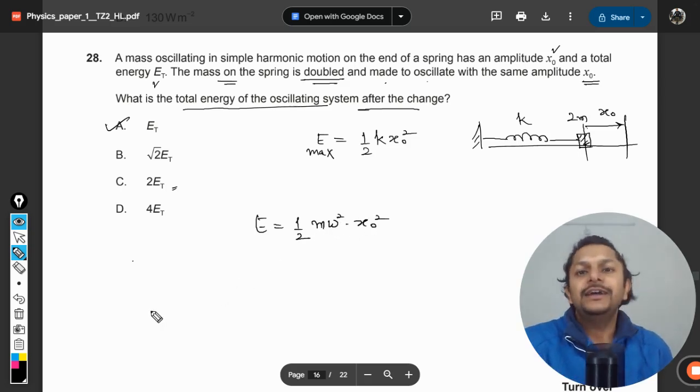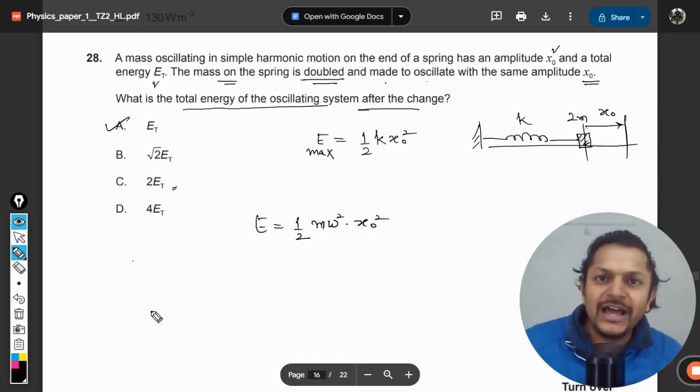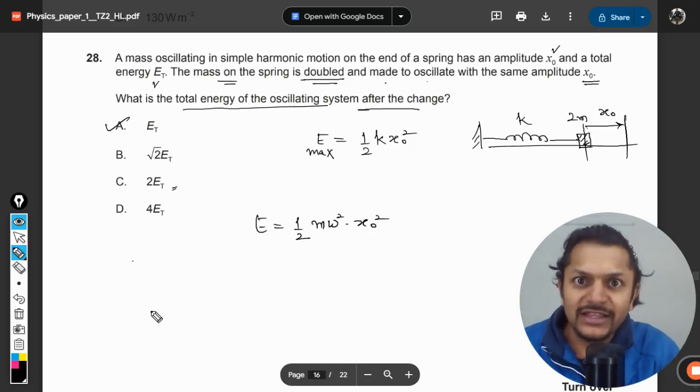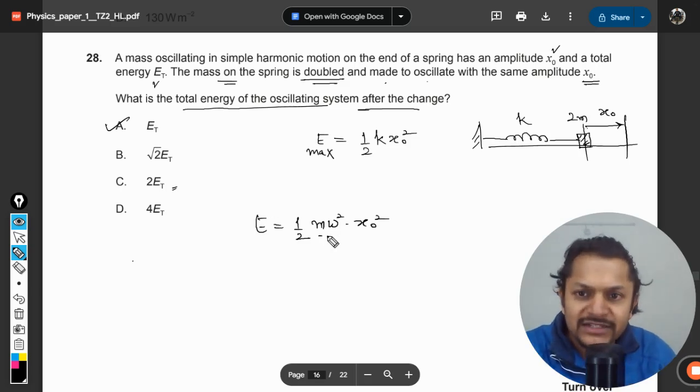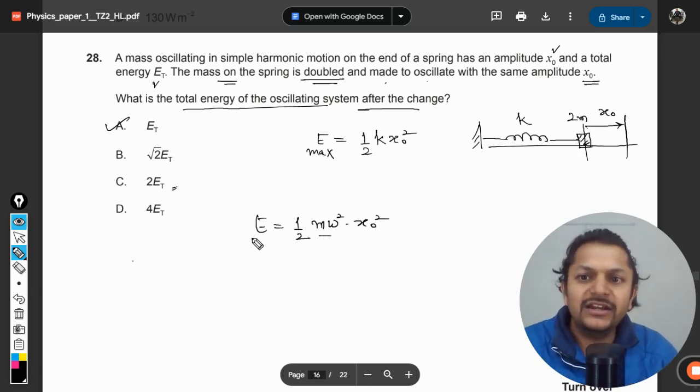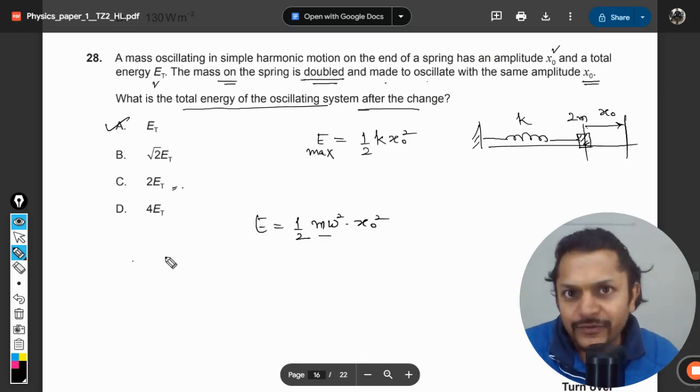This is the formula given in the data booklet, and you would be opening the data booklet at that time and you will see okay, mass is there, mass is doubled, clearly the energy is doubled, and hence the answer is C. And there you are, the answer is wrong. A is the correct answer for this.